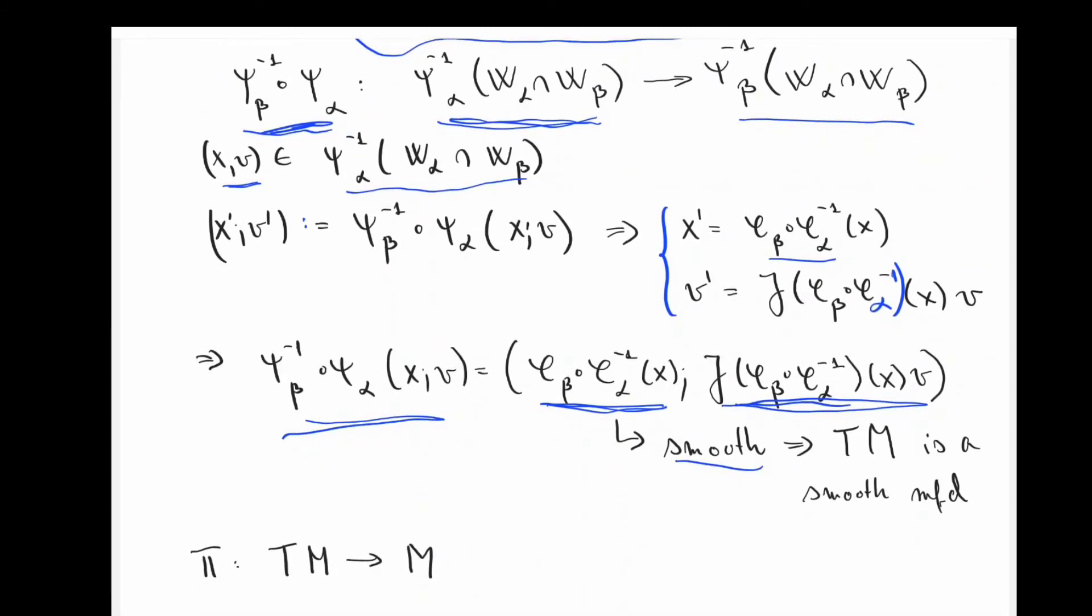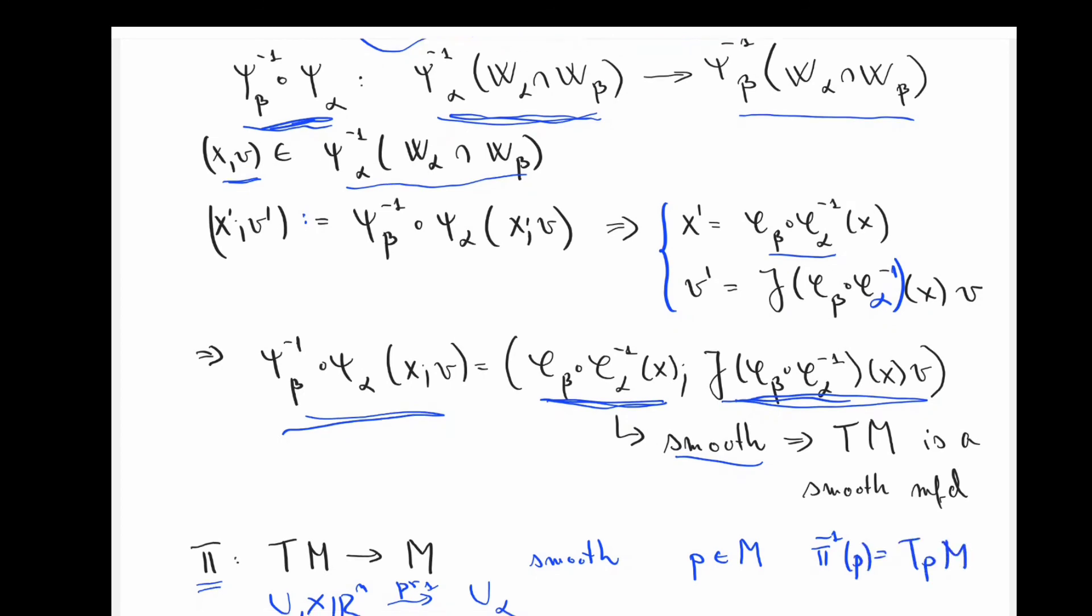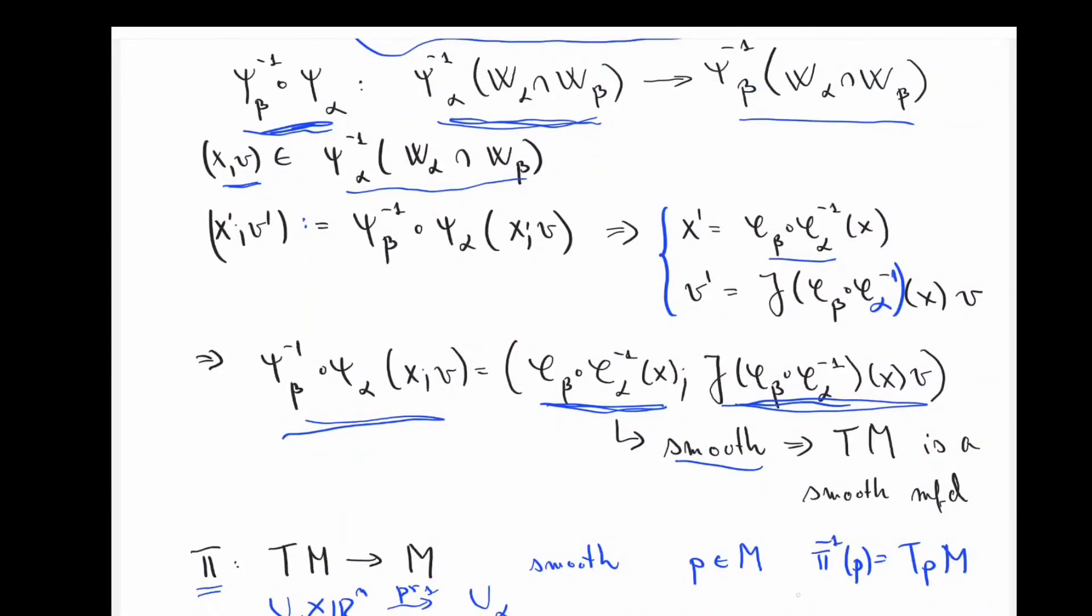And then the one additional thing that I have on this smooth manifold is this projection map pi. So what this does is that locally it will take, at least in these different charts, it will just be a projection onto the first component. It's not hard to see that this is also a smooth map. Moreover, for every point on the manifold, its inverse is going to be a r vector space.